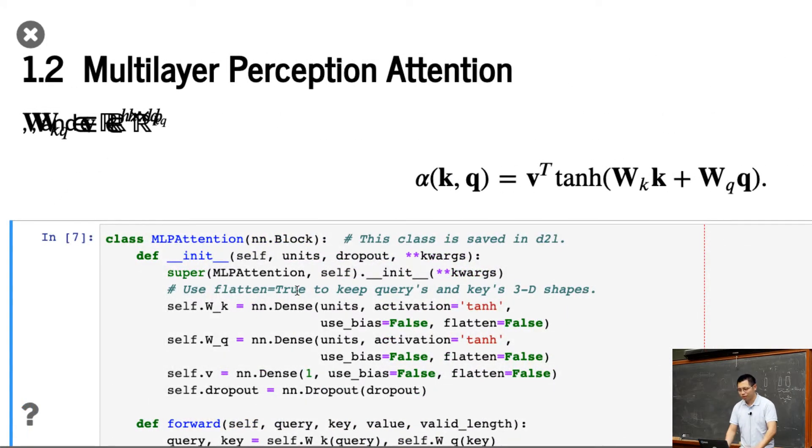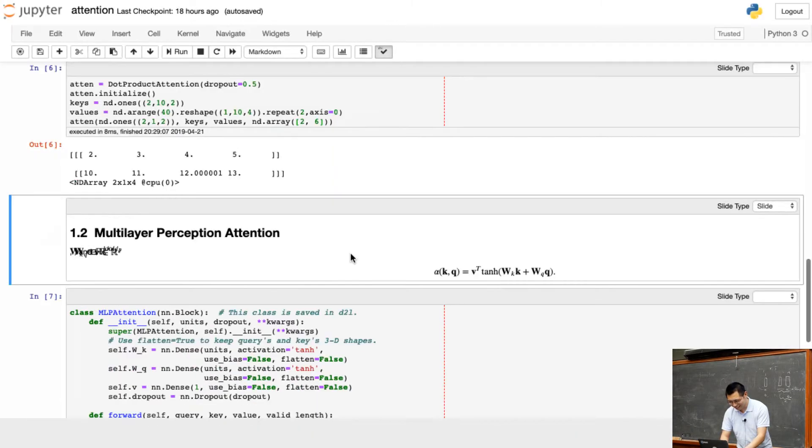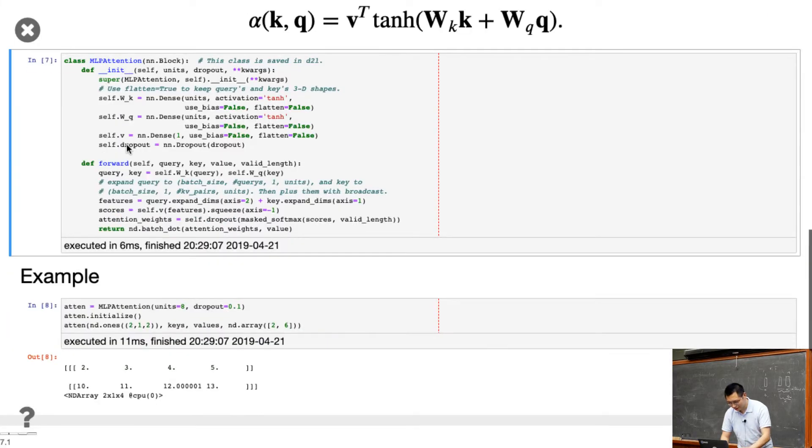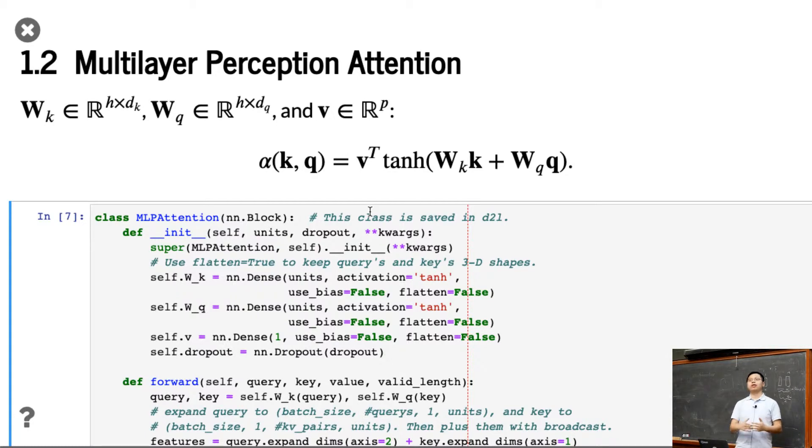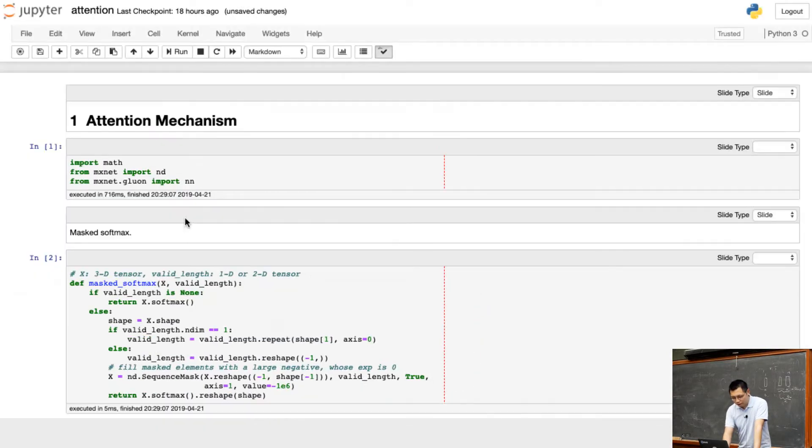Then the other one is called multi-layer perceptron. So it will be harder, but you don't need to implement all these learnable parameters. We just created two dense layers. The first dense layer, we actually created three. Basically, WK is a dense layer. We use activation tangent, and we don't use bias. We use bias equal to false, because it's 3D vectors, we just put the flatten equal to false. We only apply dense layer to the last dimension. Similarly, we create WQ. There's another dense layer. And V is also a dense layer, but output size is one, and we also don't use any activation function here, and also don't use any bias. The reason we don't just create WK and WQ is because we just want the dense layer to manage all these parameters for us.